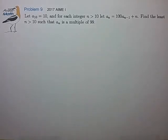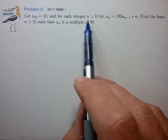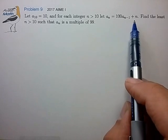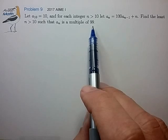Hi, this is problem 9 from the 2017 AIME. Let a sub 10 equals 10, and for each integer n greater than 10, let a sub n equal 100 times a sub n minus 1 plus n. Find the least n greater than 10 such that a sub n is a multiple of 99.